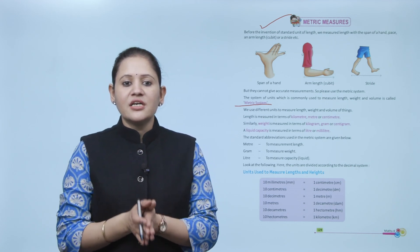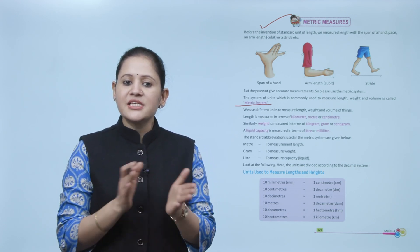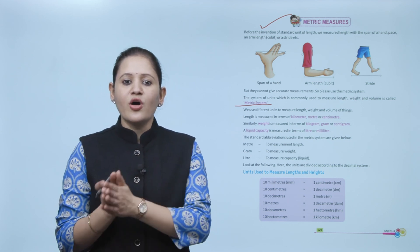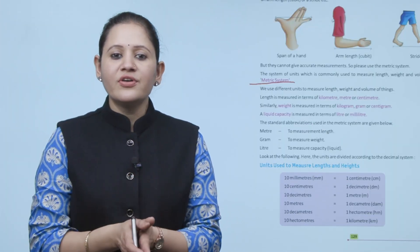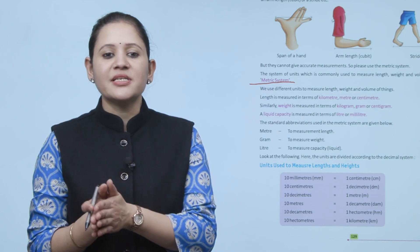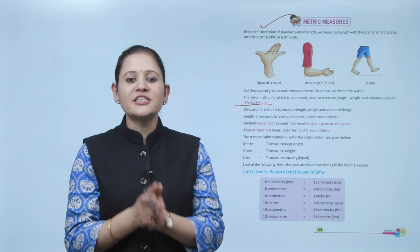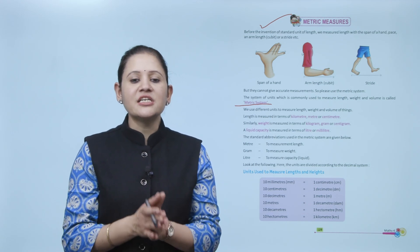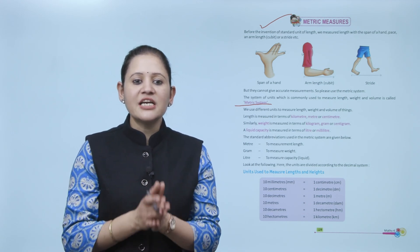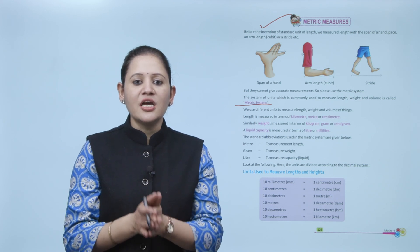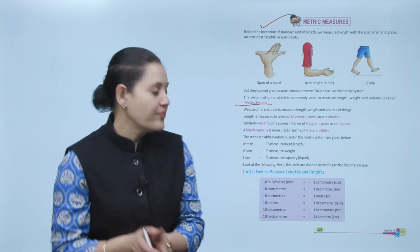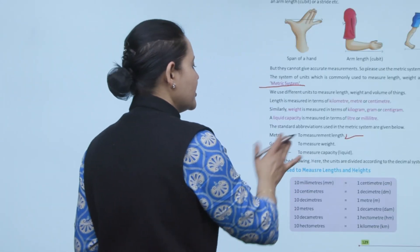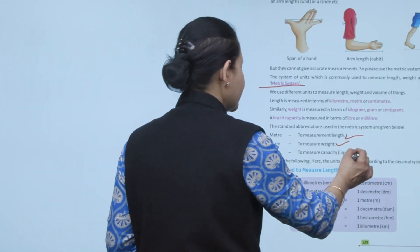We use different units to measure length, weight, and volume. Length is measured in kilometers, meters, and centimeters. Similarly, weight is measured in kilograms, grams, and centigrams. Liquid capacity is measured in liters and milliliters. The standard abbreviations used in the metric system are: meter for length, gram for weight, and liter for capacity of liquid.